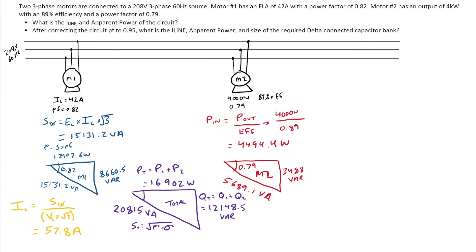And what I get would be 57.8 amps. So that's my old line current. So I'll put that answer up here. I get 57.8 amps. And my old apparent power before correction was 20,815 VAR.